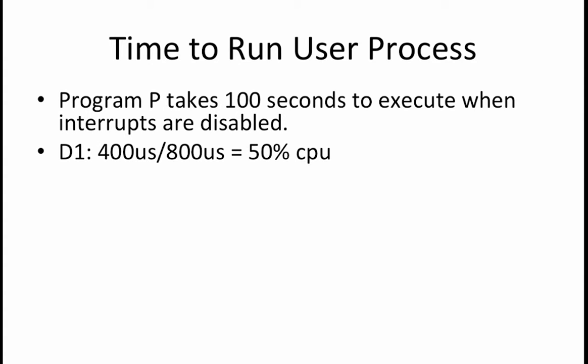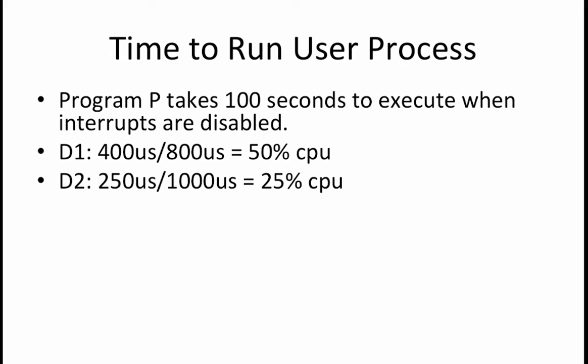D1 has a service time of 400 microseconds and it runs every 800 microseconds, so it is using 400 over 800, or 50% of the CPU time. D2 has a service time of 250 microseconds and it runs every 1000 microseconds, so it is using 250 over 1000, or 25% of the CPU time.